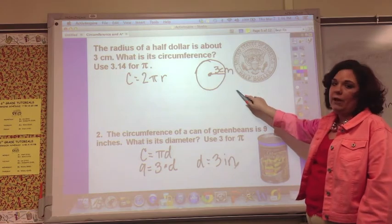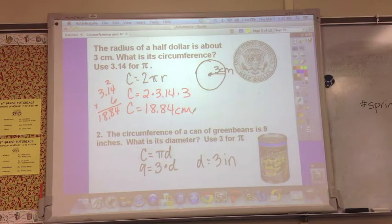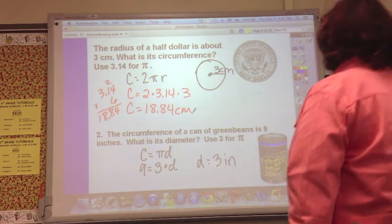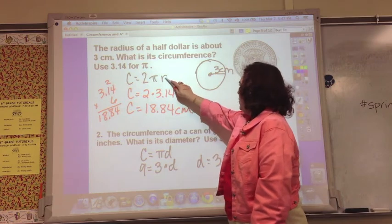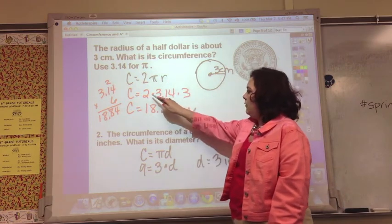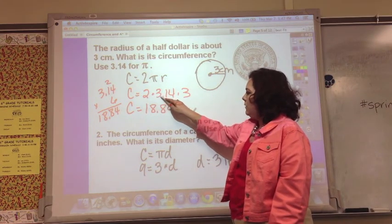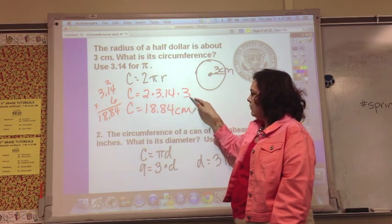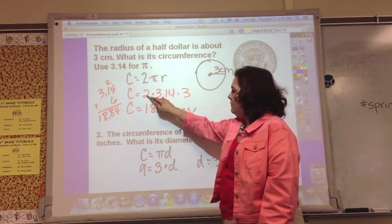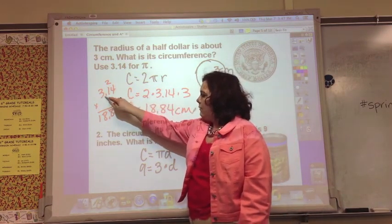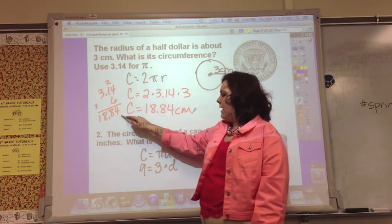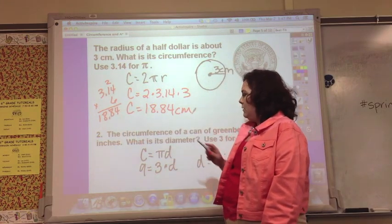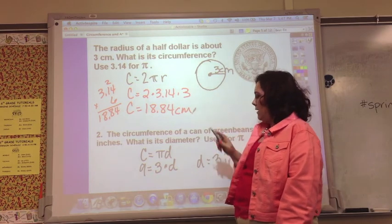Go ahead and do this one and you can come back and check your work. In this one we use the radius formula, so plug it in: 2 times 3.14 times 3. 3 times 2 is 6, 3.14 times 6 is 18.84, and the unit is centimeters.